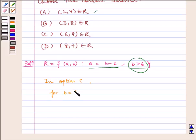And here we can clearly see that in option C, for b = 8, we have a = 8 - 2, which is equal to 6.